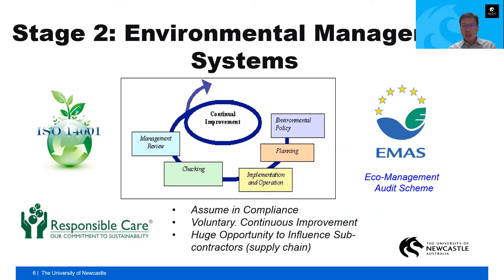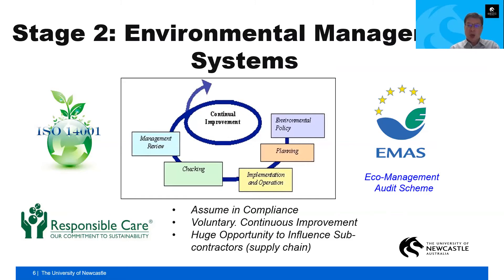In Europe, if you have a plant you would need to meet EMAS — the Eco-Management and Audit Scheme — which is another EMS system. In the US, companies often follow Responsible Care, another EMS system common in plants under the US framework. Beyond compliance, voluntary continuous improvement creates huge opportunities to influence subcontractors and the supply chain — you can use the EMS system to leverage over suppliers and green the supply chain.